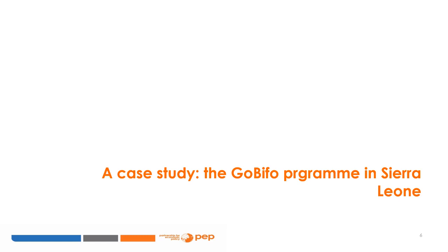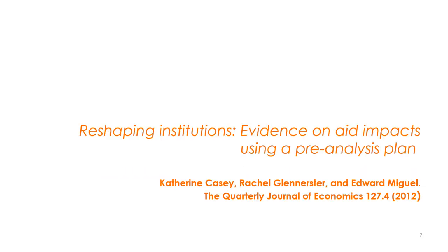We will do so by focusing on one particular case study, the GO BIFO program in Sierra Leone. The research article on which I based this discussion is titled Reshaping Institutions: Evidence on Aid Impacts Using a Pre-Analysis Plan, written by Catherine Casey, Rachel Glenurster, and Edward Miguel, and published in the Quarterly Journal of Economics, Volume 127, Issue 4, 2012.